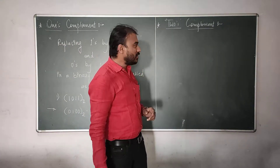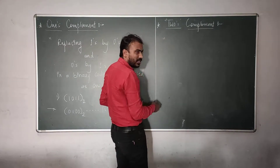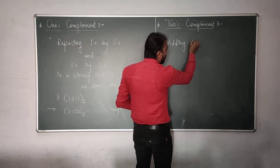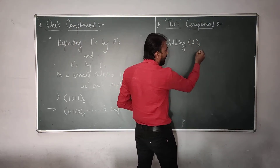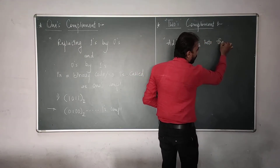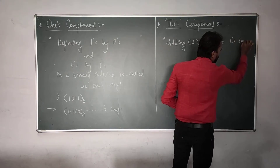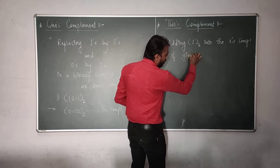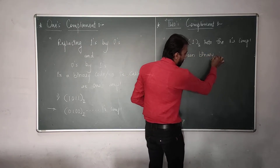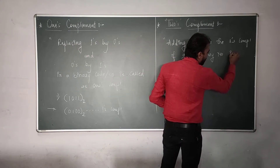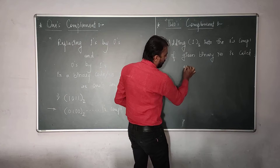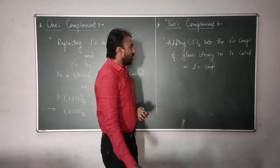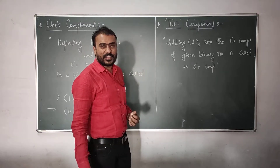Now, let us see how to calculate 2's complement. Adding 1 into the 1's complement of a given binary number is called as 2's complement.